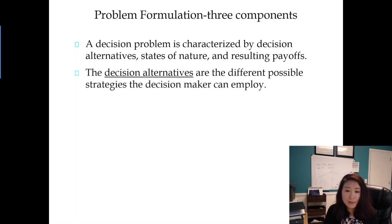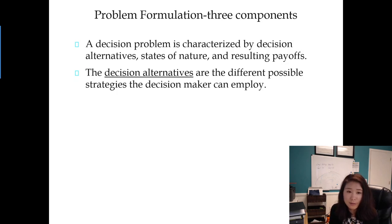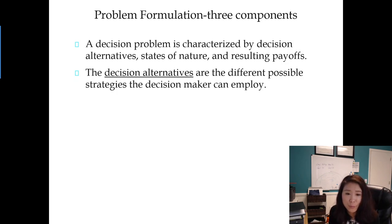Decision alternatives are the different possible strategies a decision maker can employ — basically, what options you're facing. For instance, when you graduate from high school, your options might be to go to college, start finding a job, or stay at home and do nothing. Those three possible options are the three decision alternatives.